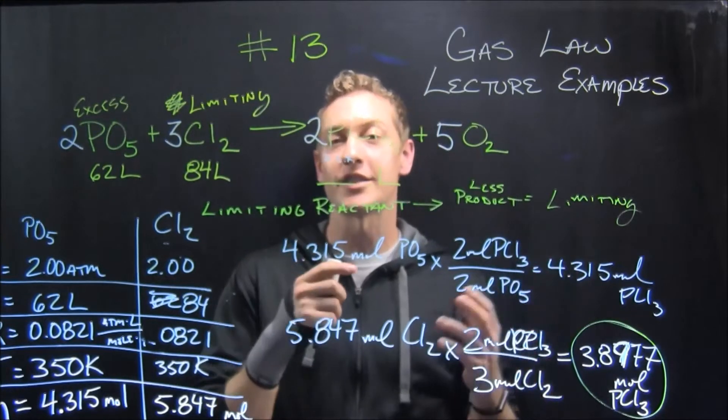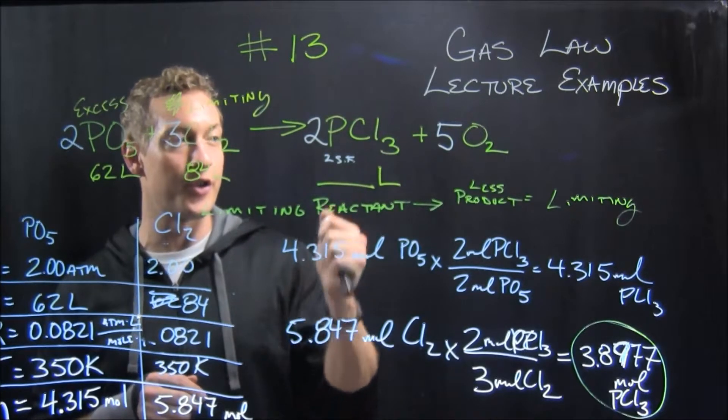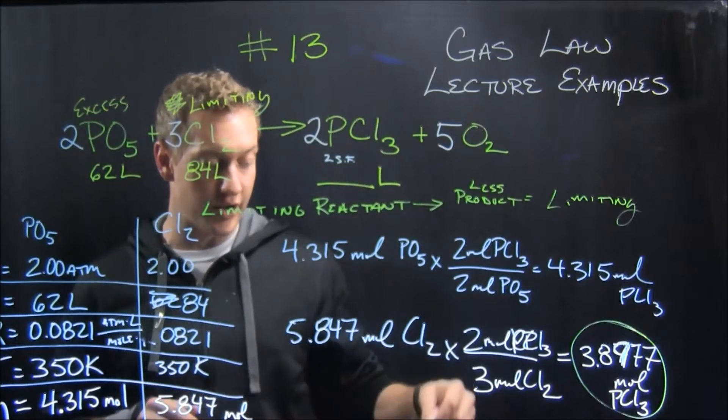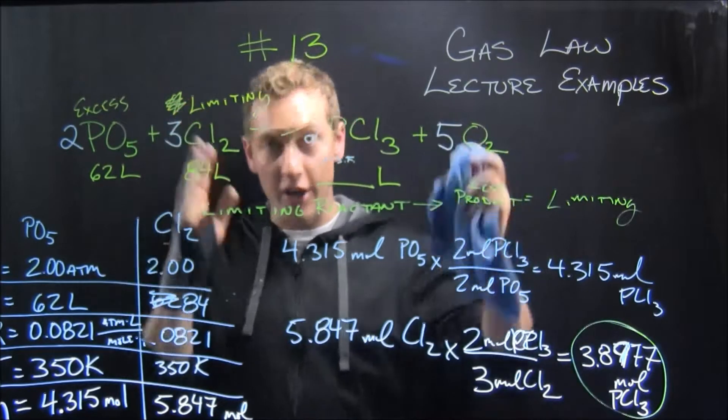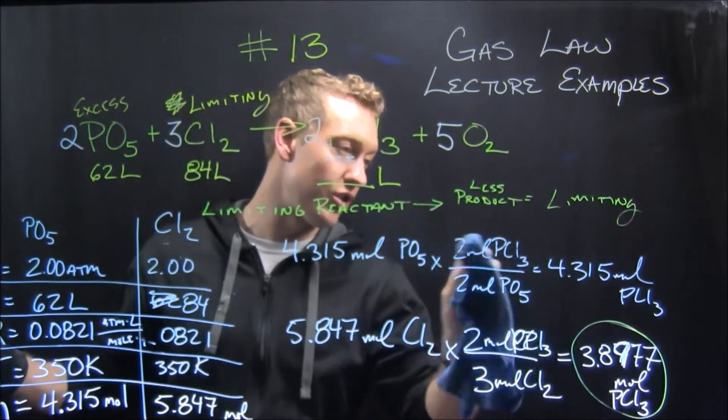if the question just asked for moles of PCL3, we'd be done with this infernal thing, but it's not. It asks for liters, and so we've got to do another PV equals NRT, another ideal gas law problem.